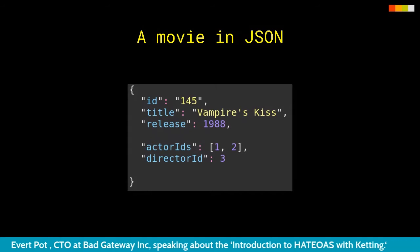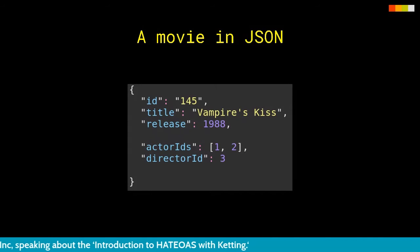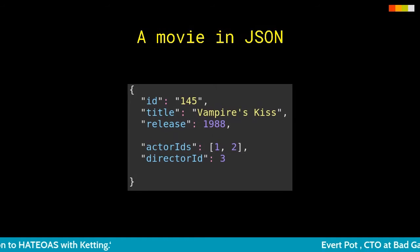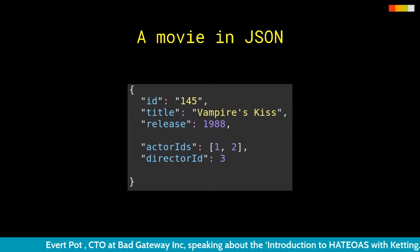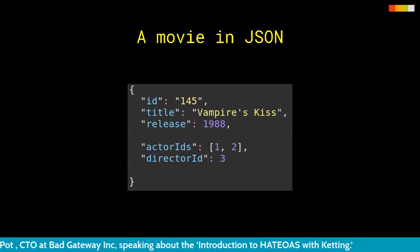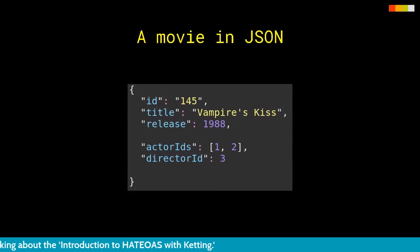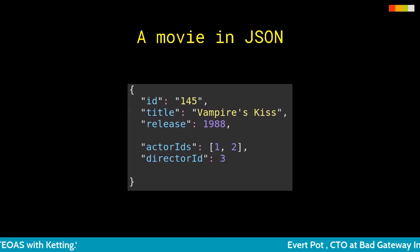Some of those questions were: how does a relationship look like? In this example, we have relationships like actors and directors, and we just specify them as IDs, assuming the client can take those IDs and figure out how to get more information. Other questions were: how do we change these relationships? How do filters work? How does paging work? And what does a collection of things look like?